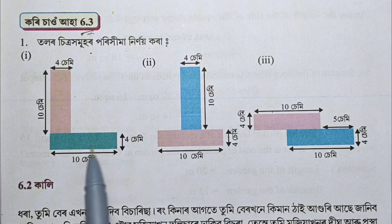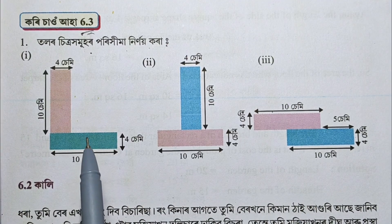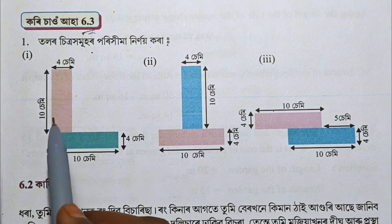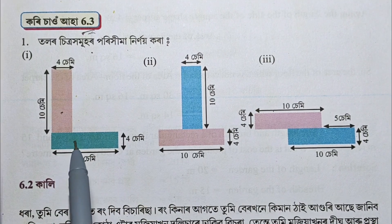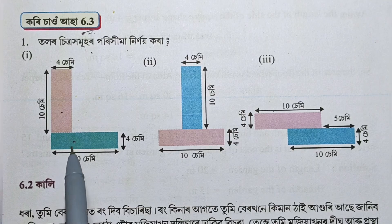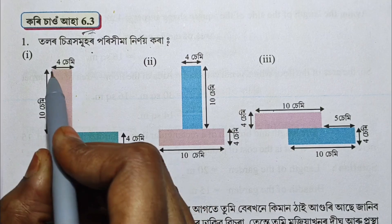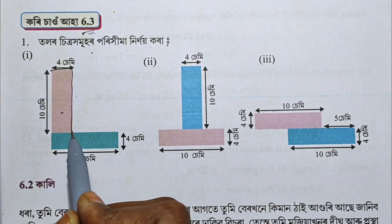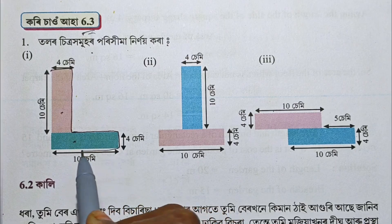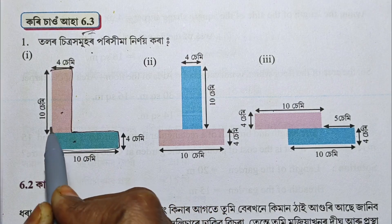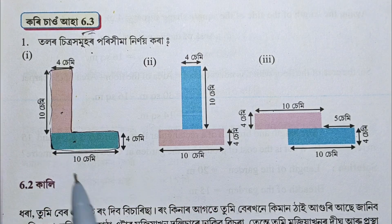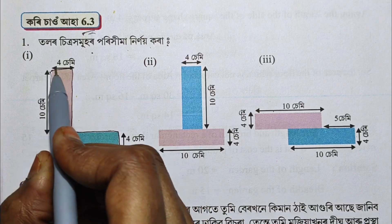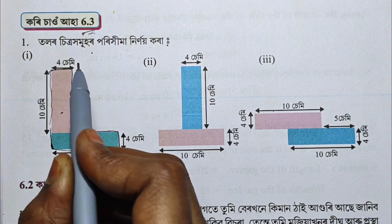Let me show you how to find the perimeter of the following figures. We are going to put a borderline around the shape and add all the side lengths together.